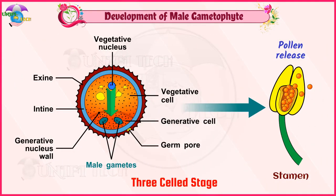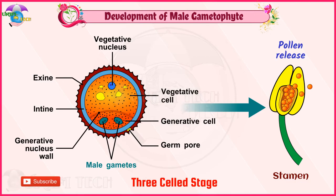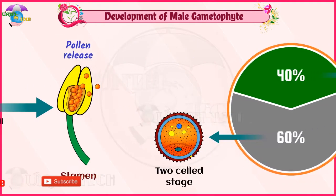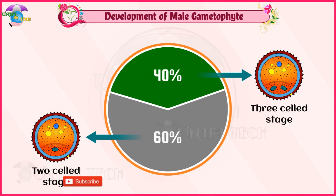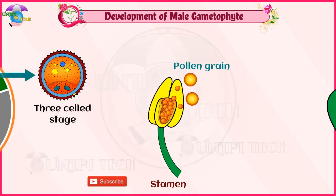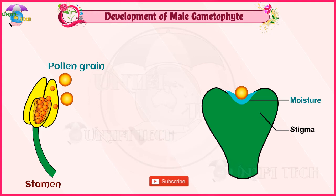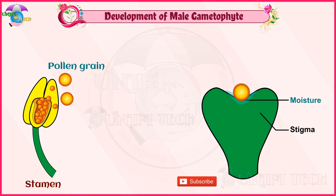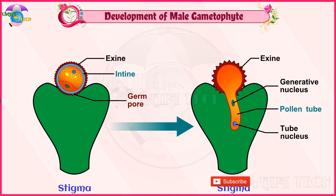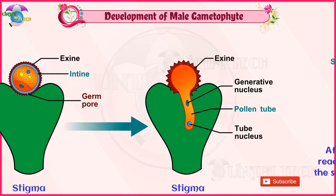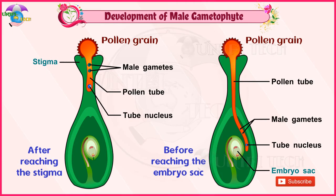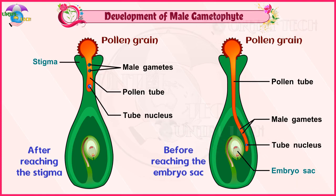In some plants, the generative cell again undergoes division to form two male gametes. In these plants, the pollen is liberated at the three-celled stage. In 60% of angiosperms, pollen is liberated at the two-celled stage. Further, the growth of the male gametophyte occurs only if the pollen reaches the right stigma. On reaching the stigma, the pollen absorbs moisture and swells. The intine grows as a pollen tube through the germ pore. If the pollen is liberated at the two-celled stage, the generative cell divides in the pollen tube into two male cells after reaching the stigma or before reaching the embryo sac.